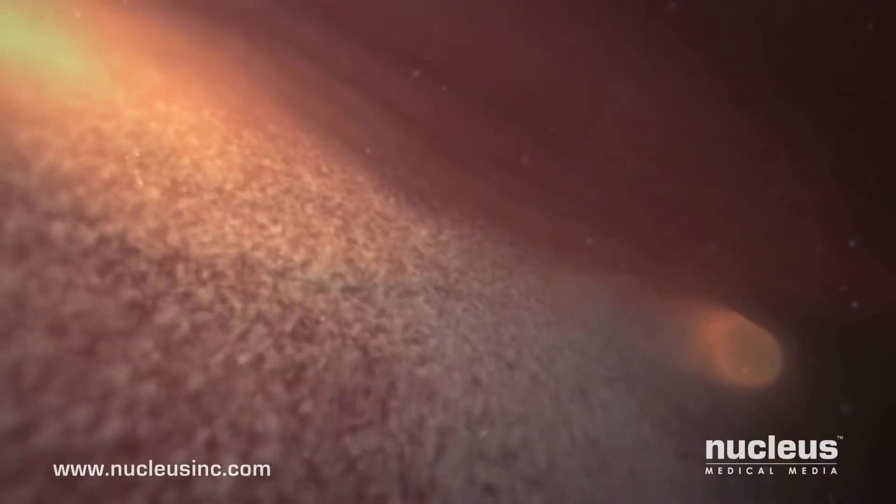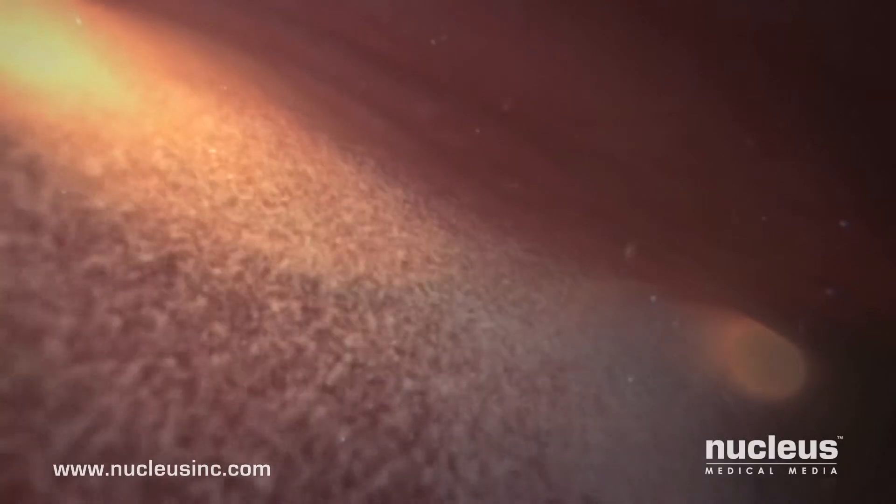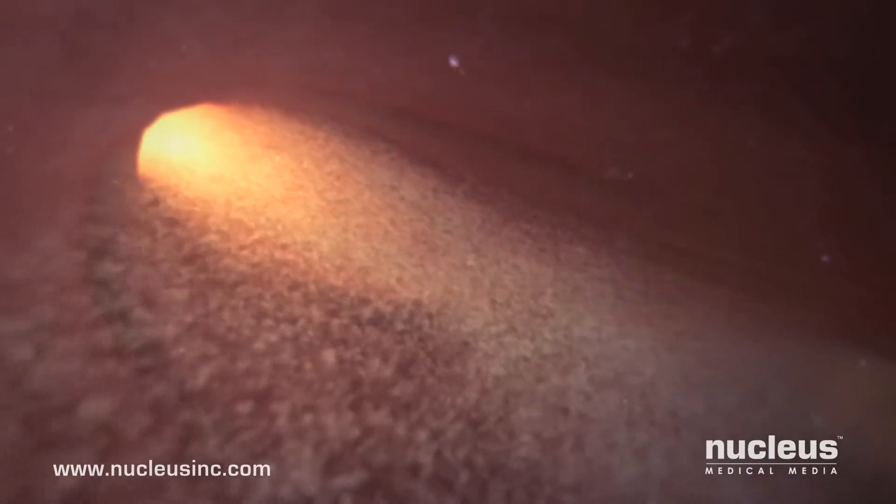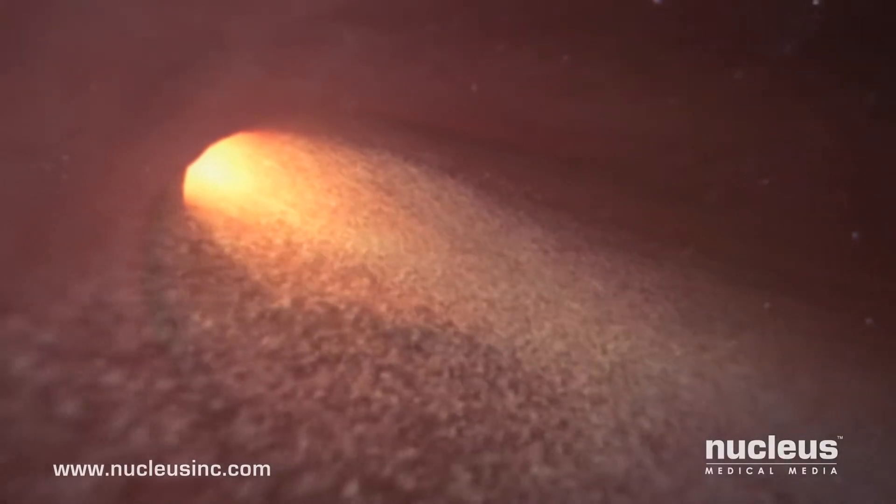Next, half the sperm head for the empty fallopian tube, while the other half swim toward the tube containing the unfertilized egg. Now, only a few thousand remain.